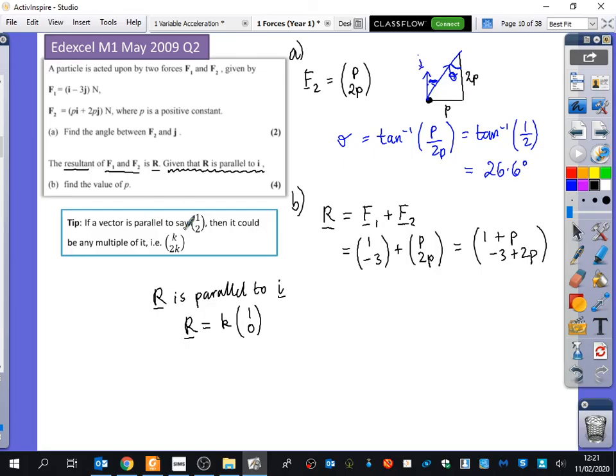So I know that this thing here, which is R, is also a multiple of (1, 0). So I can put that together, and I can say (K, 0), because this is obviously just (K, 0). (K, 0) is equal to (1 plus P, -3 plus 2P).